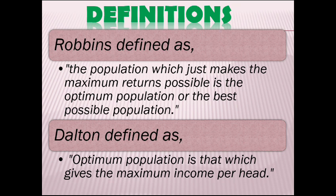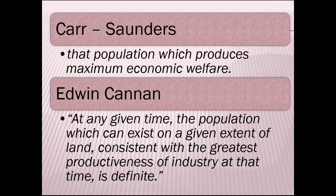Dalton has defined optimum population as that which gives the maximum income per head.